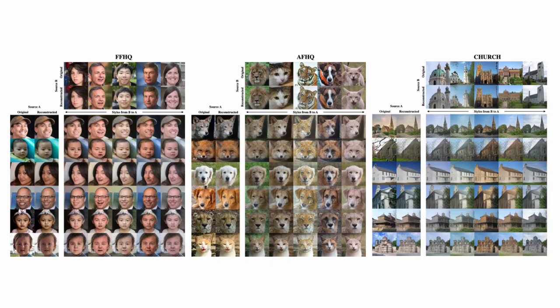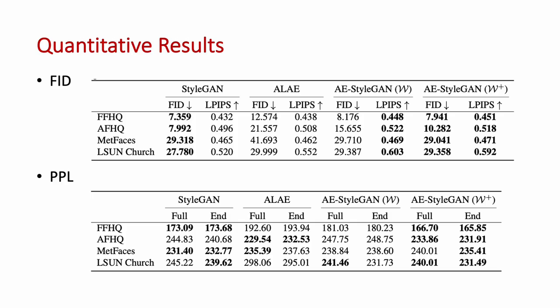Here we can see some style transfer results of our model. Our joint AE StyleGAN achieves much lower FID compared to ALAE, and the values are comparable with StyleGAN. We also achieve lower perceptual path length compared to StyleGAN, which means our model has a better disentangled latent space.